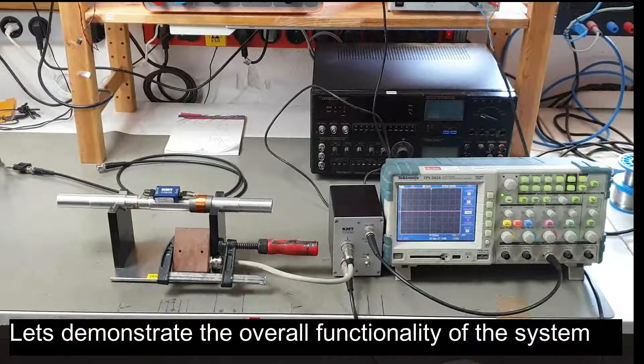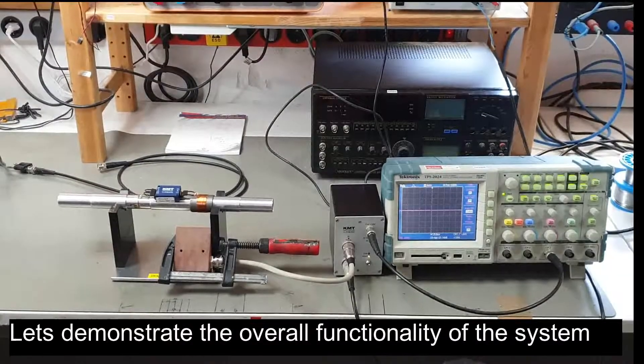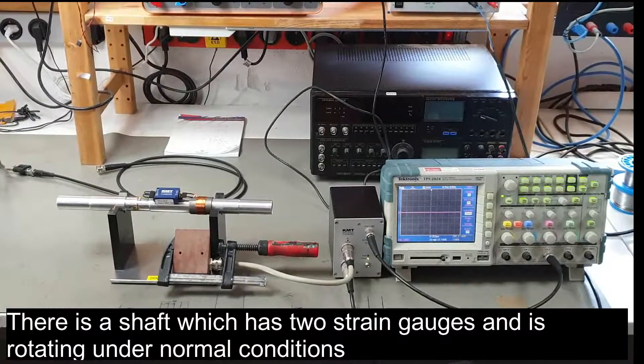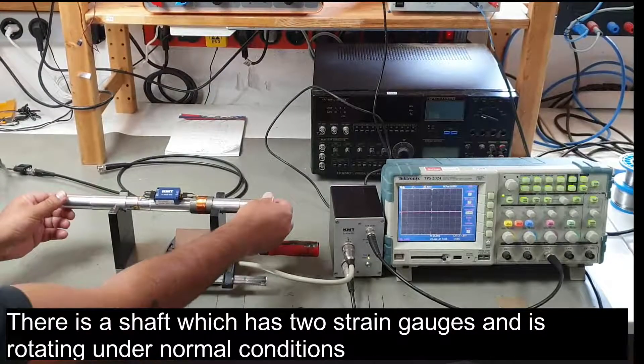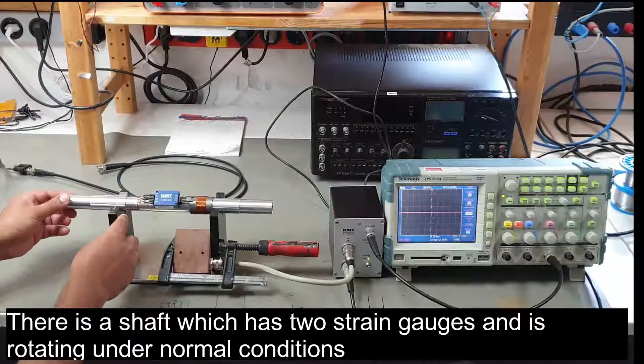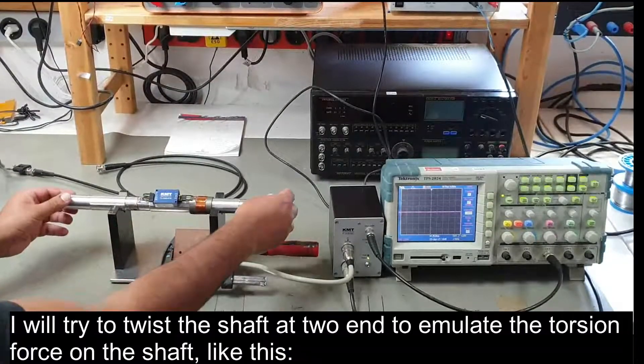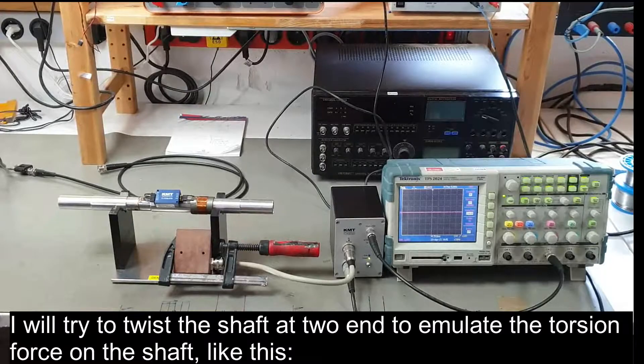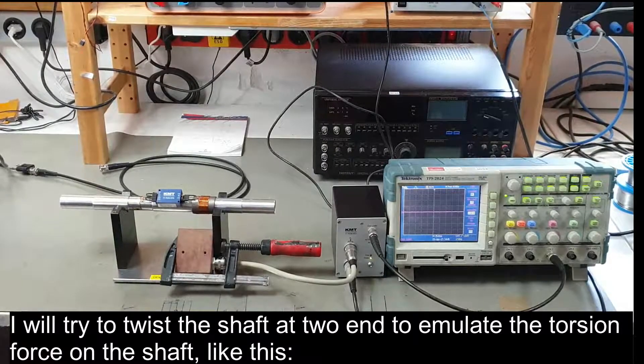Let's demonstrate the overall functionality of the system. There is a shaft which has two strain gauges and it's rotating on normal conditions. I'll try to twist the shaft to emulate the force on the shaft.